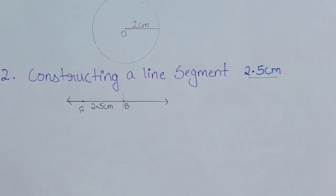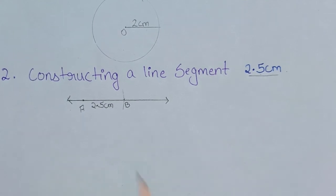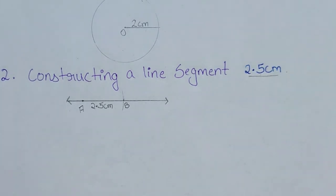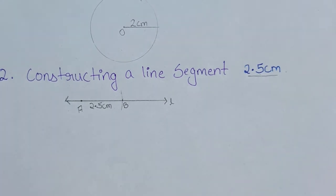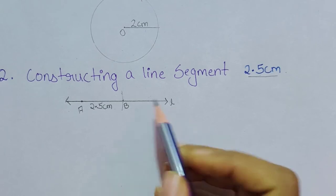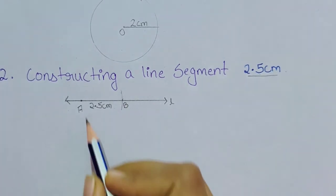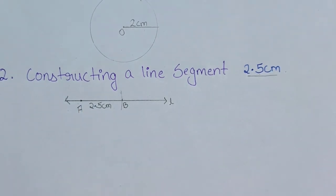After construction, write the steps of construction. Step 1: Construct a line L and mark a point A on it. Step 2: Place the compass at A and cut an arc of 2.5 centimeters cutting the line at point B. Step 3: AB is the line segment of the required length. These steps are very important while doing construction.